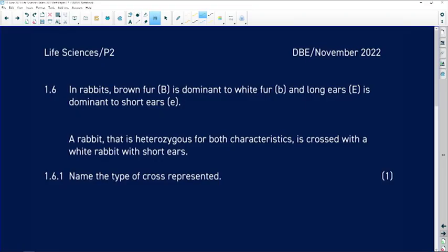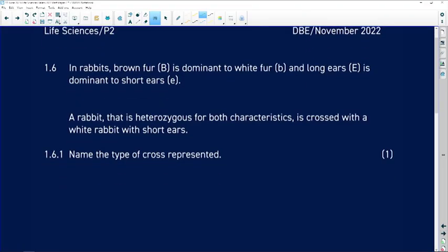That brings us finally to 1.6. In rabbits, brown fur is dominant over white fur, and long ears (capital E) is dominant over short ears.